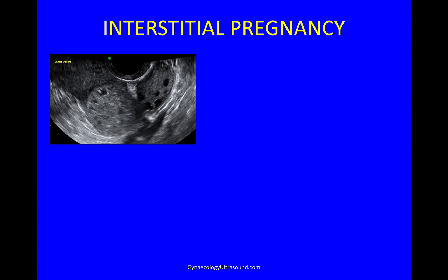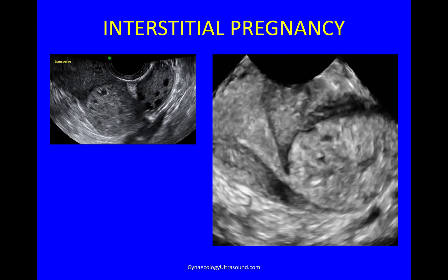In interstitial pregnancy the 3D view is very important. In this case there is a transverse view of the uterus and ovary, with a pregnancy in this position — whether it is tubal or interstitial is difficult to determine on 2D. But on 3D, with the endometrial cavity visible at one edge, you can clearly see this is just the beginning of the interstitial portion of the fallopian tube, and that is exactly where the pregnancy is located. It is so important to be able to make that diagnosis.